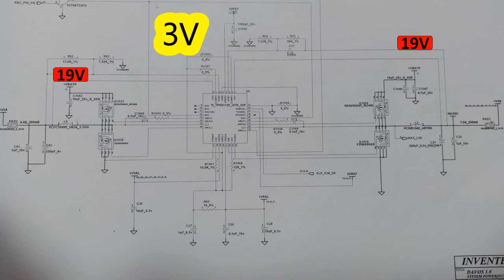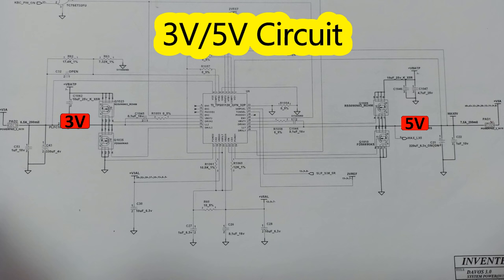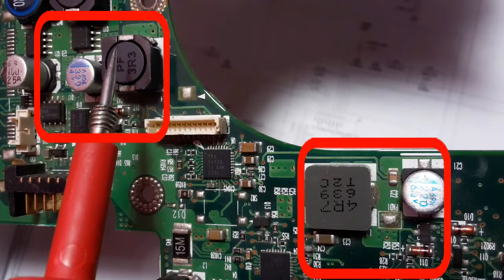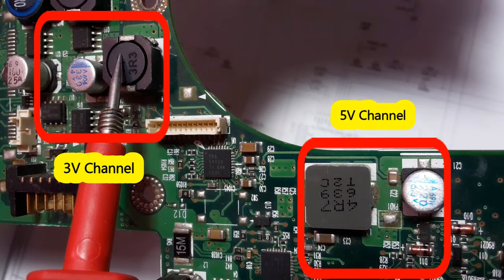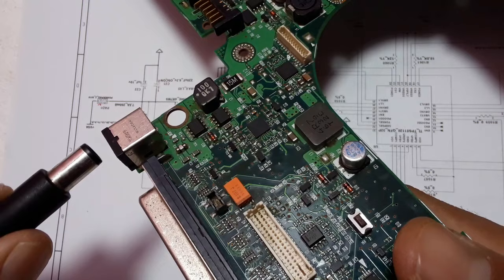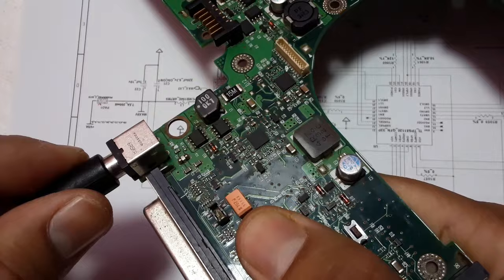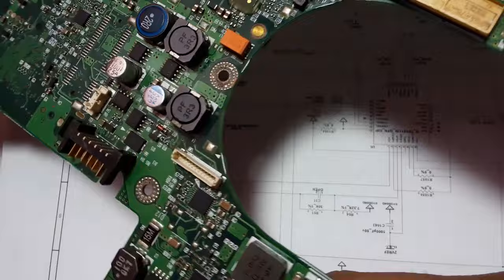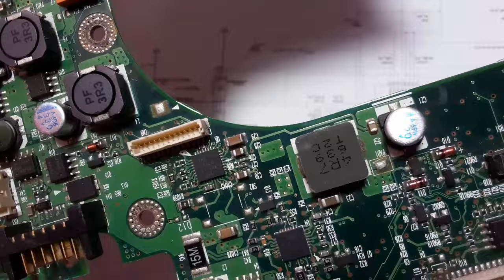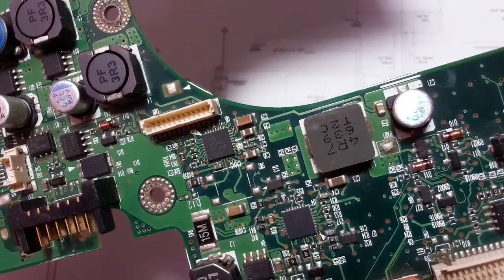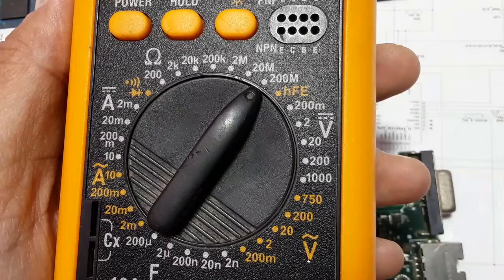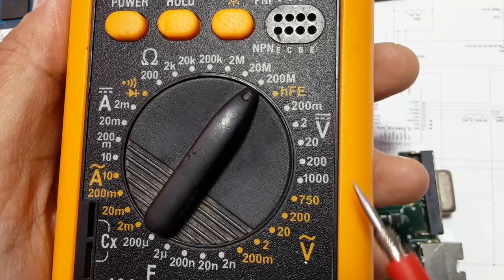Because the 3-volt and 5-volt circuit is responsible for generating the primary voltages for the whole motherboard, we're going to check this circuit first. As you can see, we have 3-volt and 5-volt channels. Let's connect the adapter and check whether we have 3 volts and 5 volts in this motherboard. By the way, this is a dead motherboard — I'm going to show you how to repair it step by step.